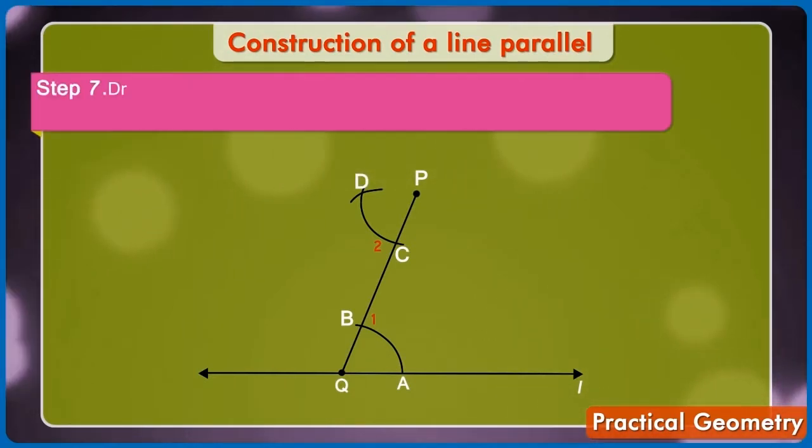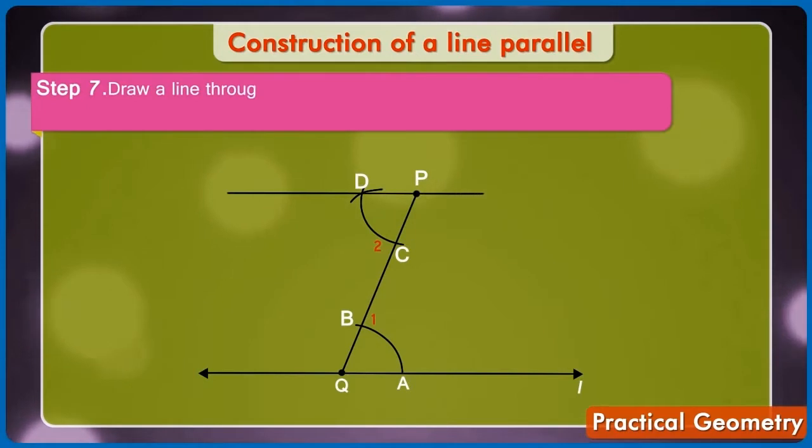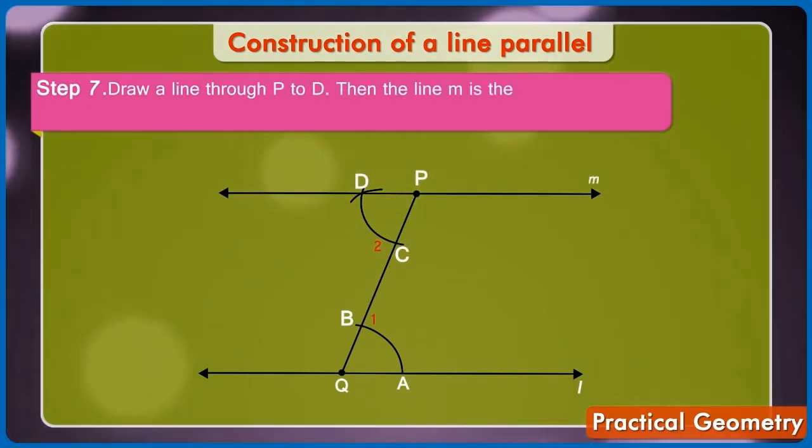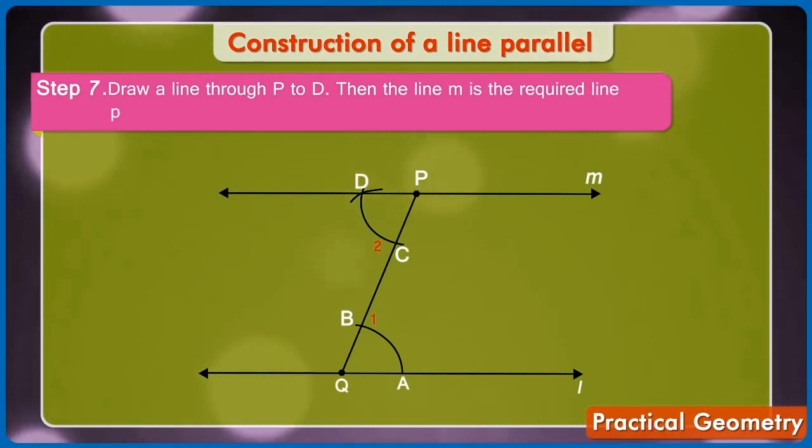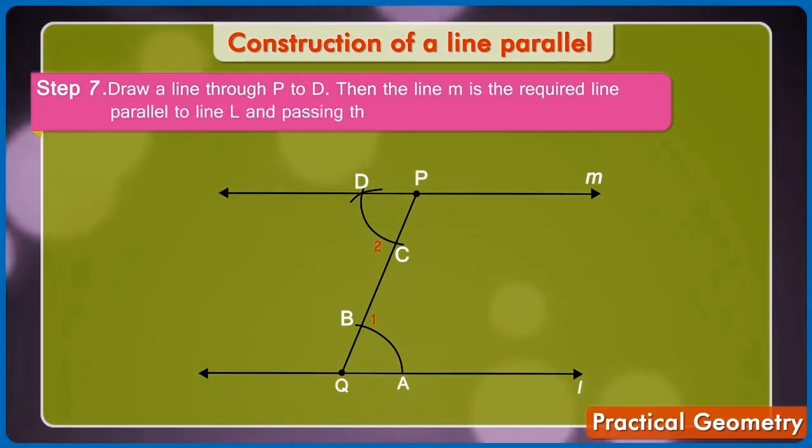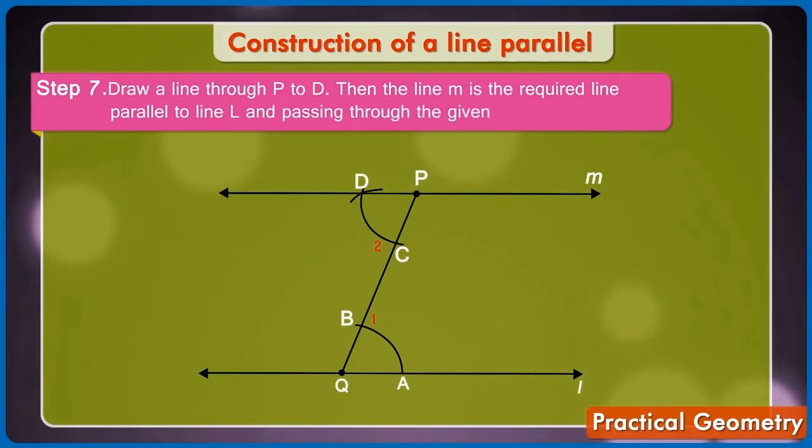Step 7: Draw a line through P to D. Then the line M is the required line parallel to line L and passing through the given point P.